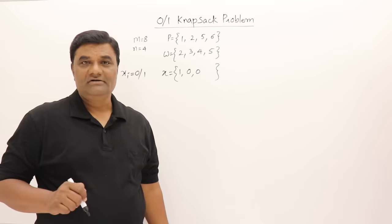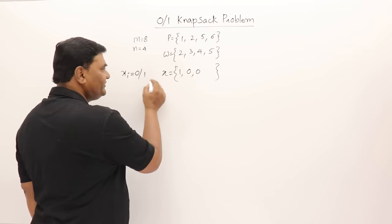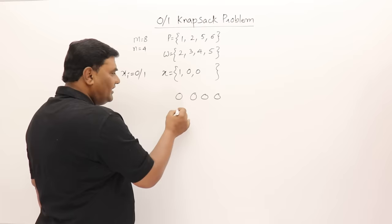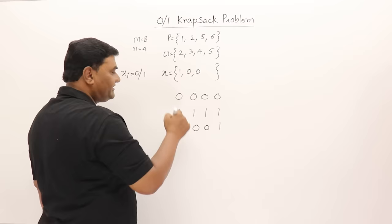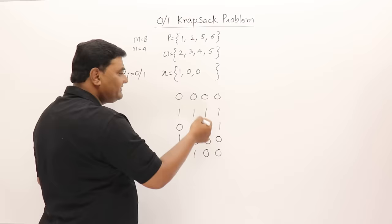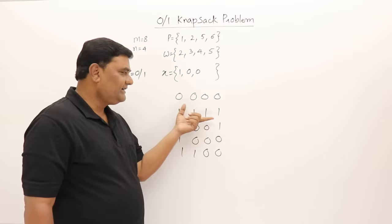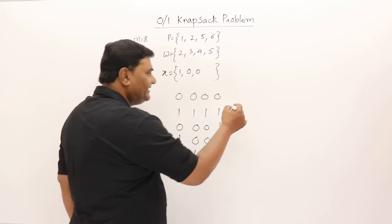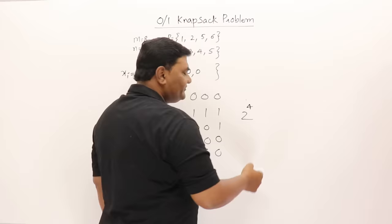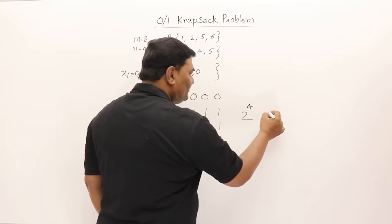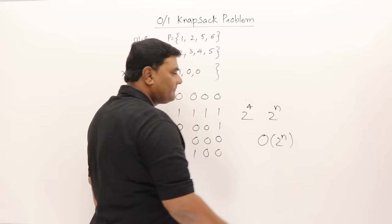Dynamic programming says you should try all possible solutions and pick the best one. When writing the solution in the form of zeros and ones, it can be 0000 (no object included) or 1111 (all included), and many combinations in between. Some may be feasible, some may not. Total solutions will be 2^4, and for n objects it will be 2^n. If we try all of them directly, the time complexity will be 2^n — too much.